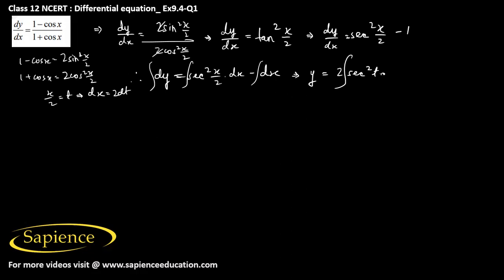So now t is x/2. 2 will come outside into dt minus integral dx is x.